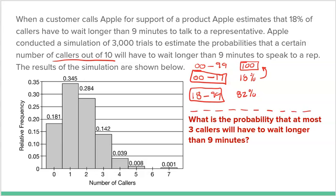We're going to look at 10 different numbers and count how many of them were zero through 17, because if a number was zero through 17, that person had to wait longer than nine minutes. Maybe this person and this person had to wait — that trial would have two people waiting longer than nine minutes. They did that 3,000 times, each time identifying how many of the 10 waited longer than nine minutes.